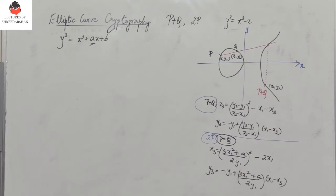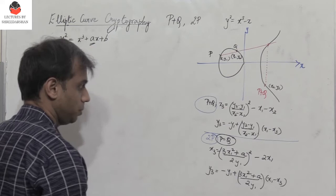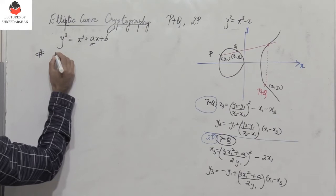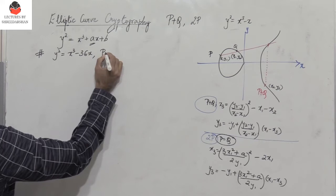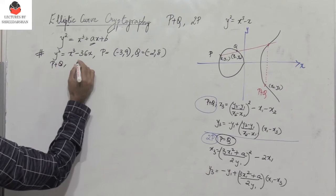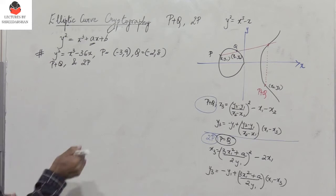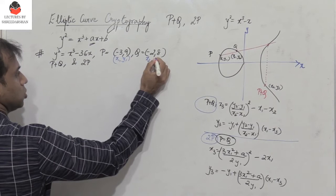Let us solve two problems. The first is straightforward, and in the next we will consider the elliptic curve in a given modulus, where we need to be more careful. Consider the elliptic curve y squared equals x cubed minus 36x. Let P equal (minus 3, 9) and Q equal (minus 2, 8). Find P plus Q and also find 2P.